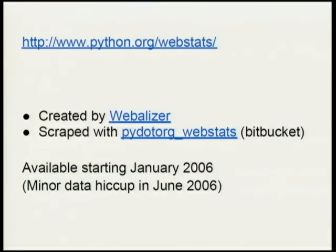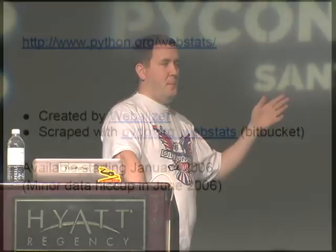If you go to python.org webstats, there's a statistical tool that analyzes the web server for what files are being downloaded. I wrote a little scraper for that — it's very specific to the py.org webstats. It takes data created by Webalizer, and starting in January 2006, every month the previous month's data is analyzed so you can figure out what's been downloaded at what rates.